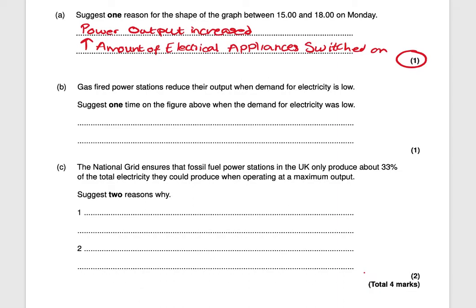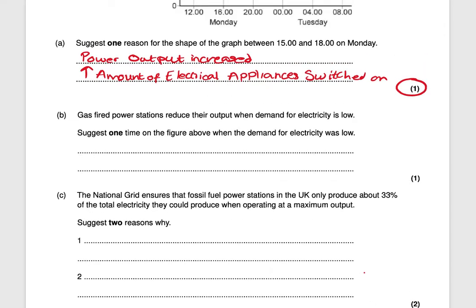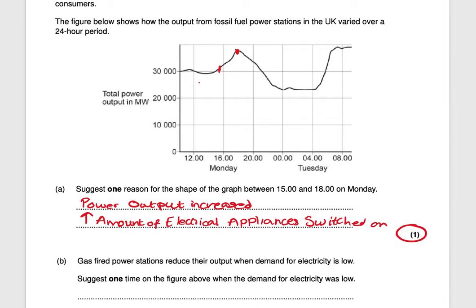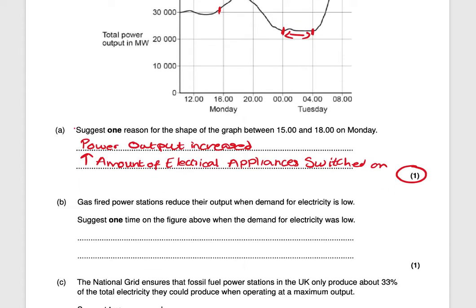Final questions now. Gas-fired power stations reduce their output when the demand for electricity is low — give one time when the demand for electricity was low. When is the total power output the lowest? As you can see on the graph, it's approximately from 12 o'clock midnight to 4 o'clock in the morning. Any value in that range would be accepted. For example, 12 o'clock. That would get you one mark.